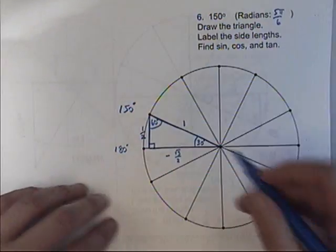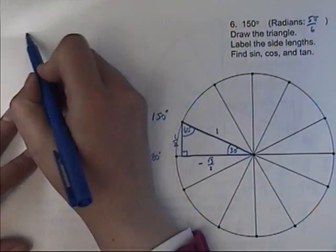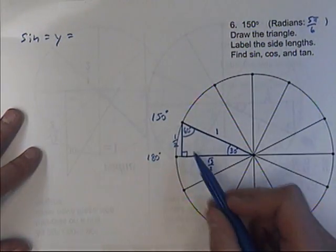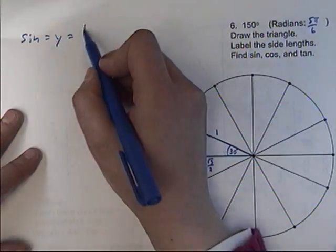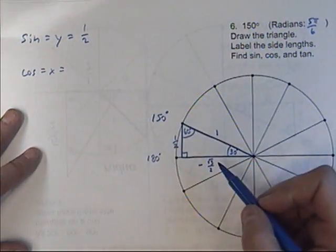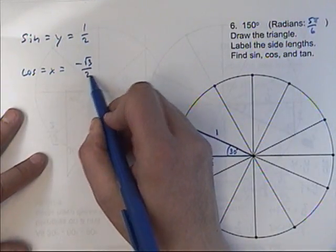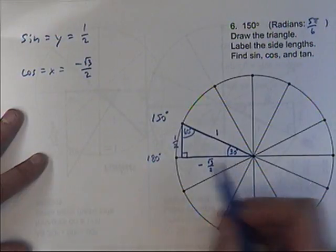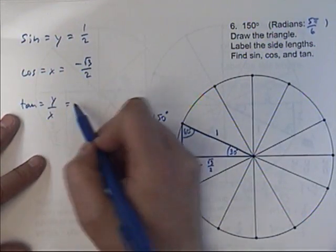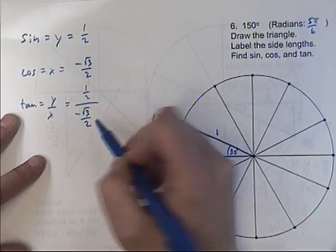And then your hypotenuse is always 1. So how do I find the sine? Well, that's just my y value, which is your vertical side — 1 half. Cosine is your horizontal side, which is negative square root of 3 over 2, because that's x. And your tangent is y divided by x, so that would be 1 half divided by negative square root of 3 over 2.